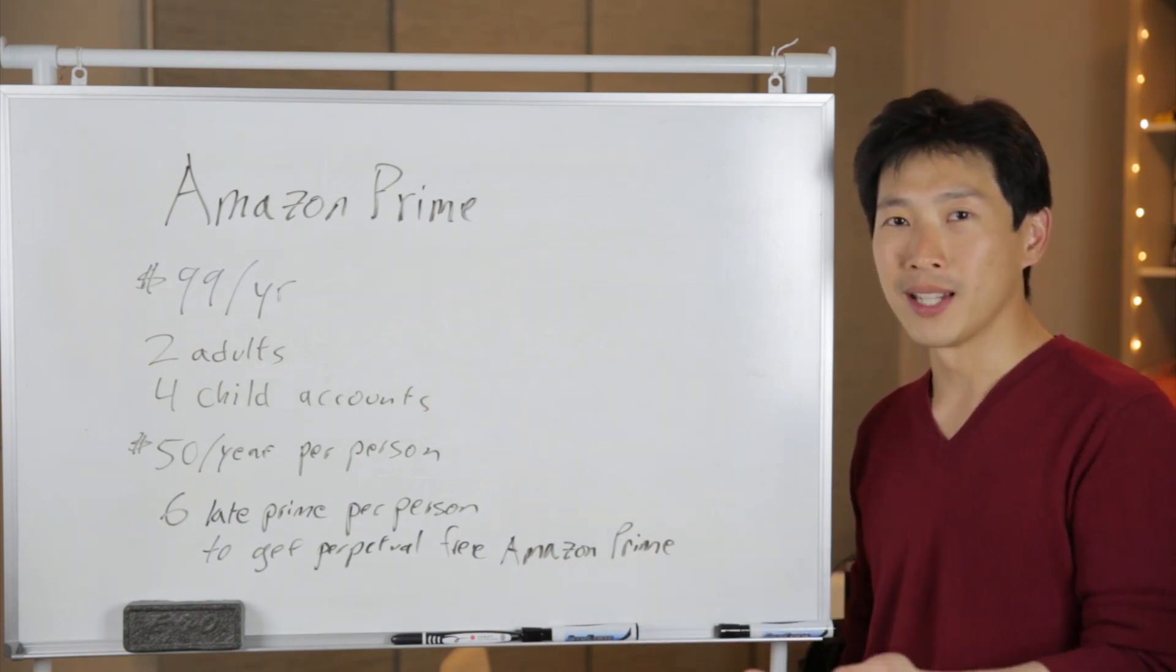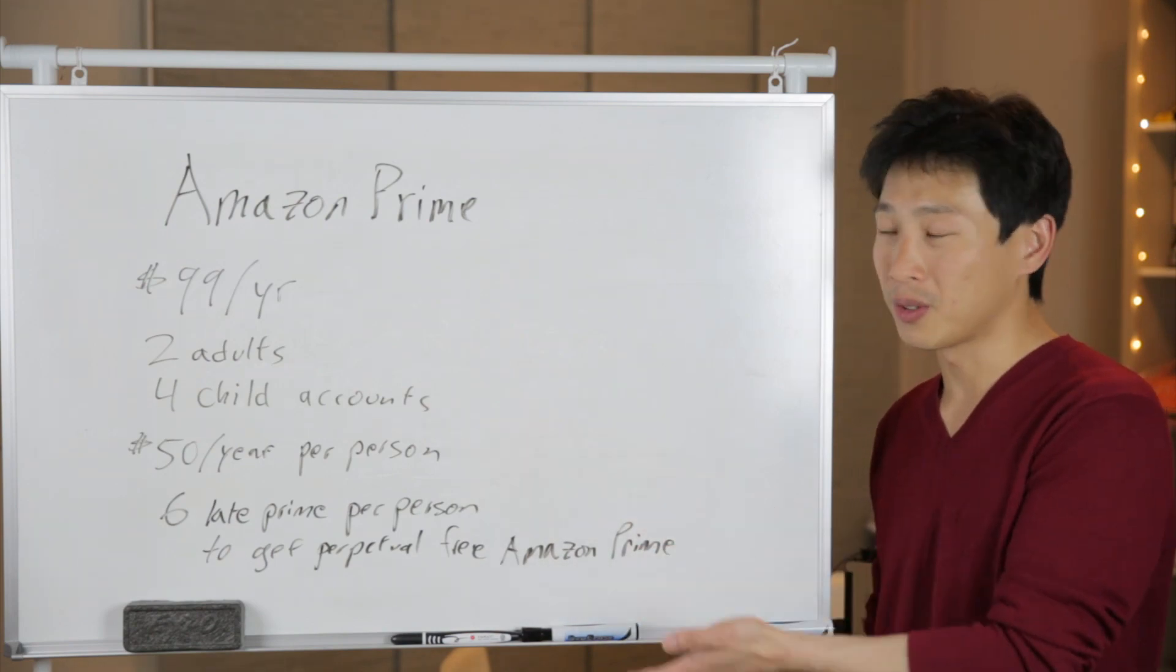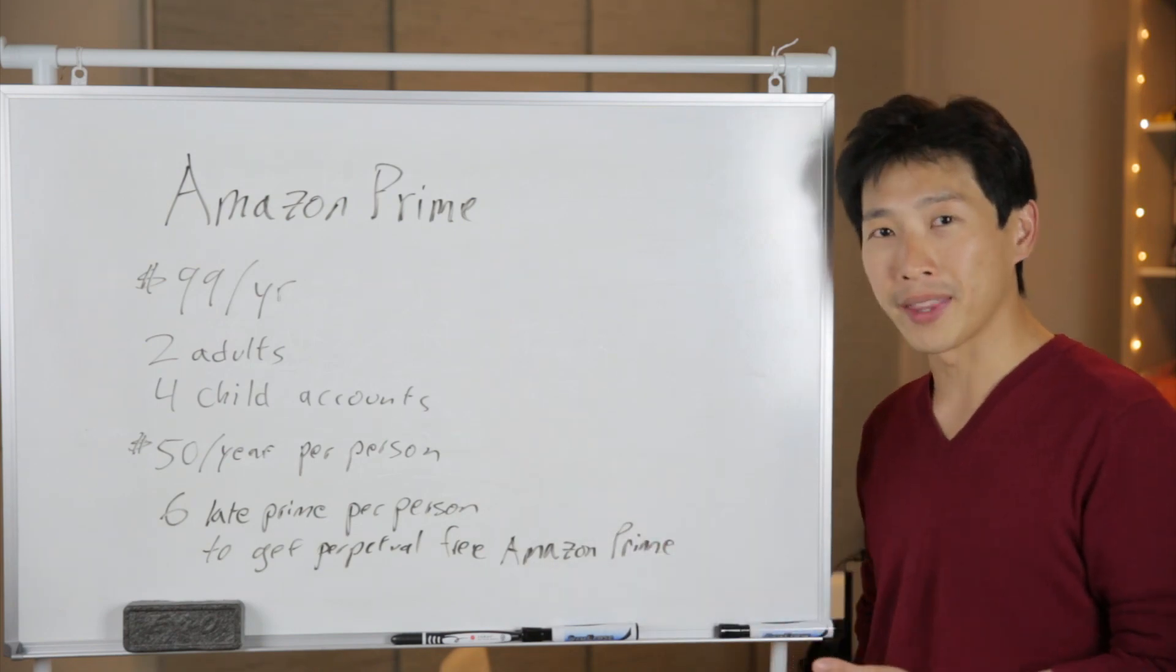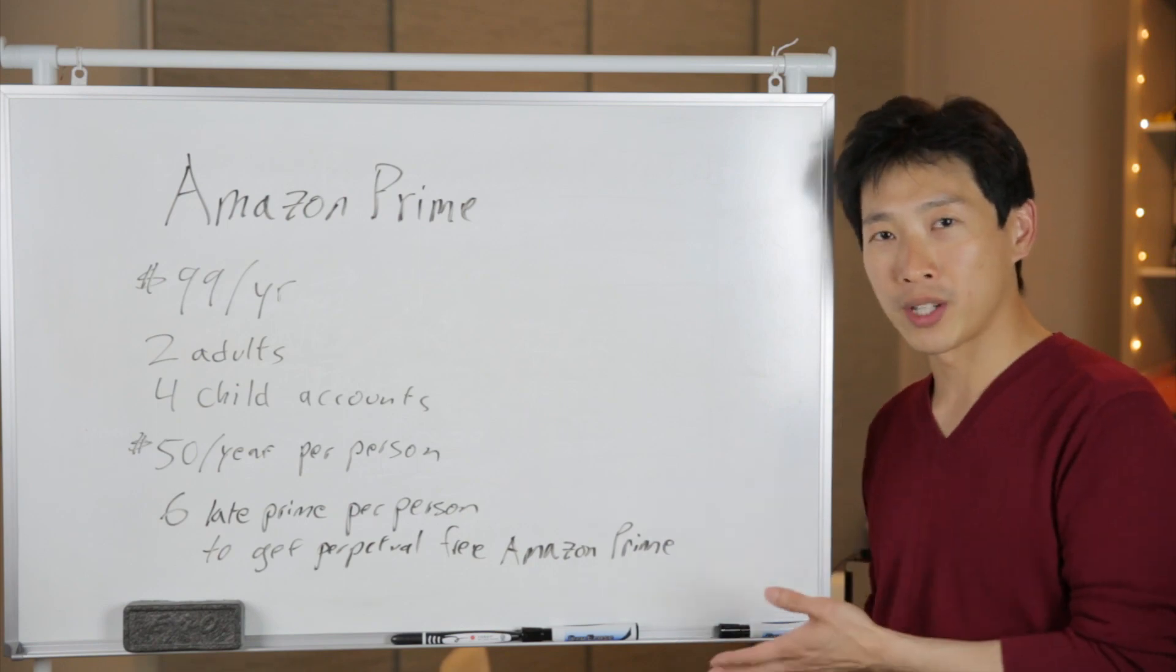Then you go through their customer service thing online, and then you say, hey, this shipment that you sent me, I actually had Prime on it, but then you're late. It is Amazon's policy to actually extend your Prime membership for one month if they're ever late on one shipment.